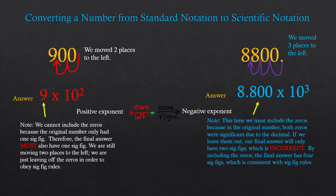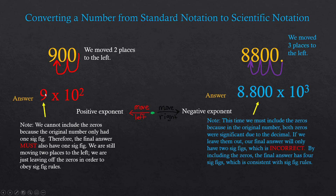Remember what I told you in the beginning: when you look at your given number you have to keep in mind how many sig figs it is good to. This number is only good to one sig fig, so I'm only going to write a 9. You don't need to write 9 with a decimal because the decimal is understood to be there. So it's just 9 times 10 to the second power.